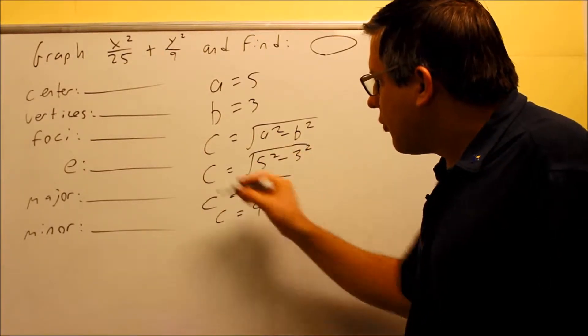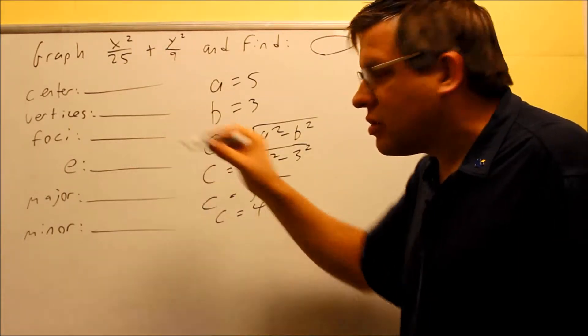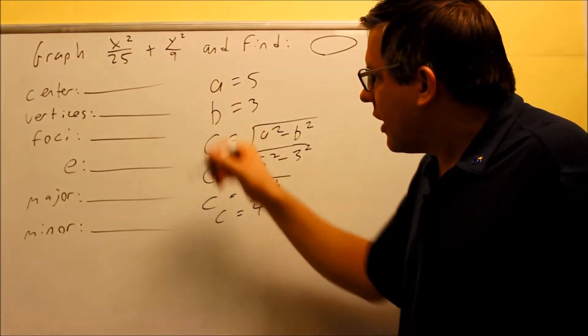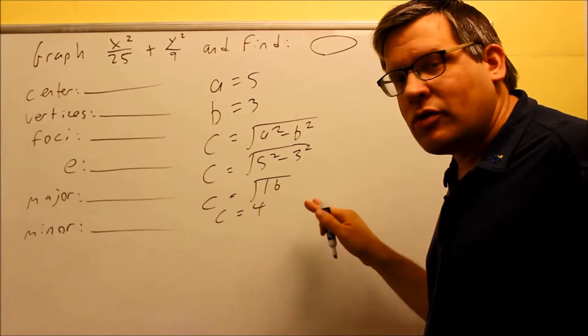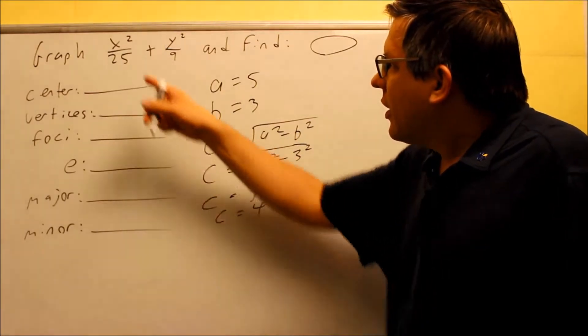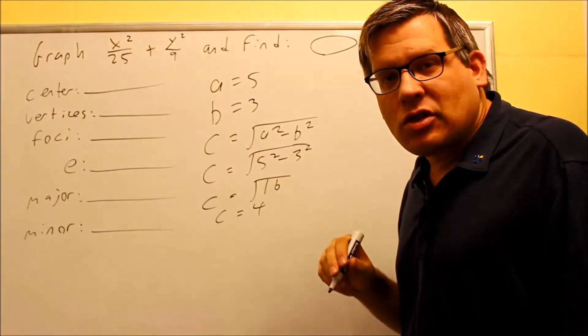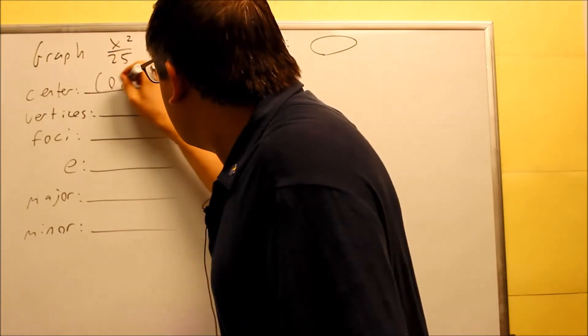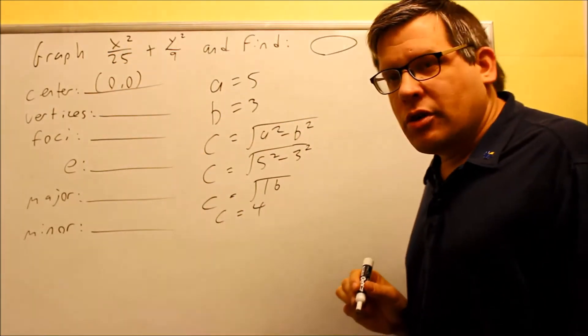The c value is used for eccentricity and it's also used to find the foci. So let's start answering some of these questions based on what we have done so far. Now center, if you don't see any parentheses around the x and the y, automatically the center is going to be 0, 0.